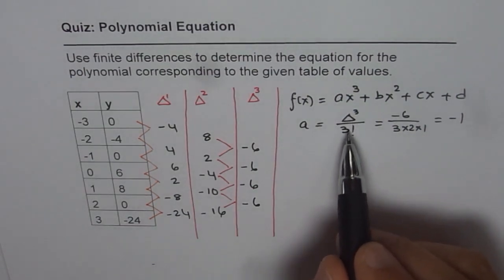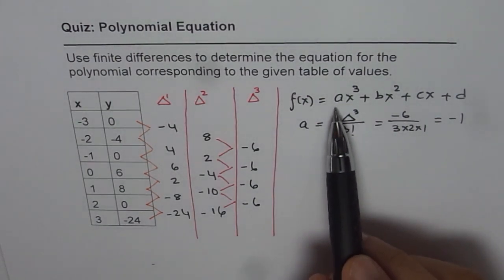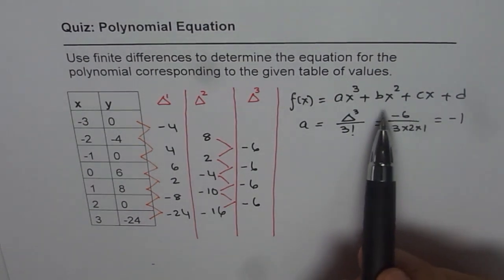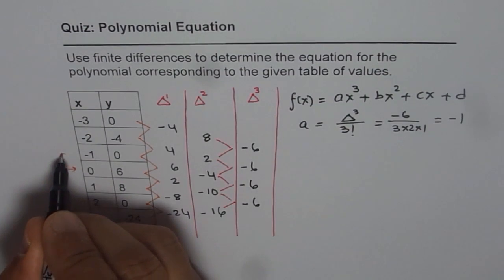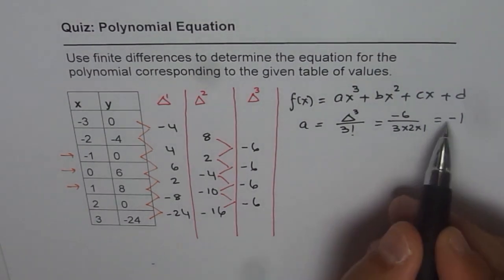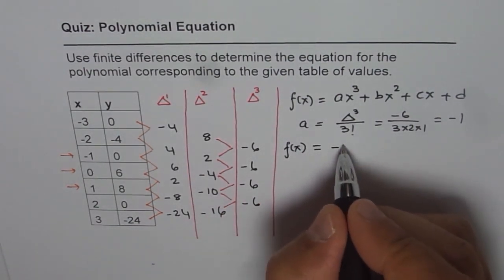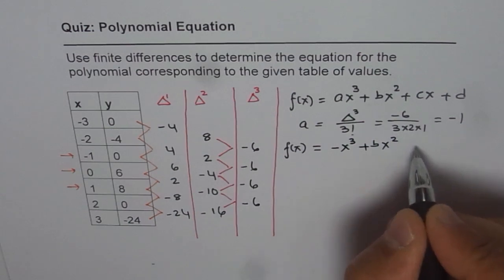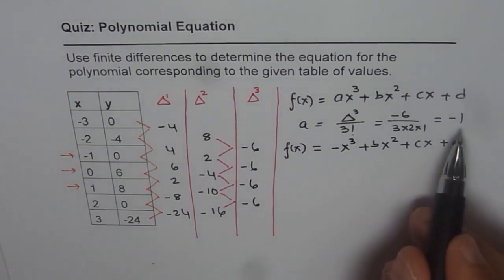Those who do not know this formula can always take four points and solve. Now we know a is minus 1. To find b, c, and d, let us take three points. Good x values to take are 0, plus 1, and minus 1. So our function becomes f(x) = minus x³ + bx² + cx + d.